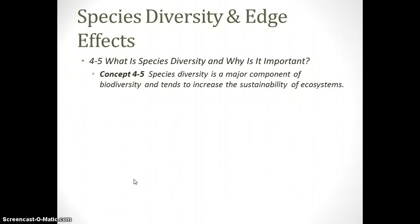Welcome to the screencast for Chapter 4, Section 5. This is the end of the ecosystem structure notes, covering species diversity and edge effects. In order to have a healthy functioning ecosystem, you need many different types of species to fill the different niches, which is why species diversity is such an important concept.